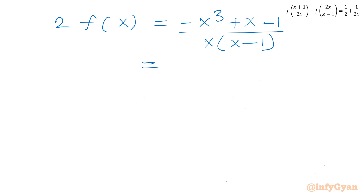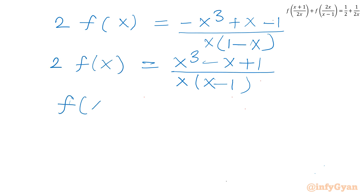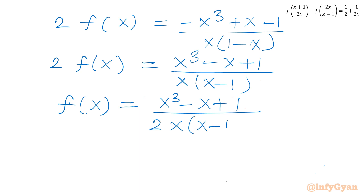Multiplying numerator and denominator by -1, we get 2·f(x) = (x³ - x + 1) / (x(x-1)). Dividing both sides by 2, the final answer is f(x) = (x³ - x + 1) / (2x(x-1)), where x cannot be 0 and x cannot be 1.